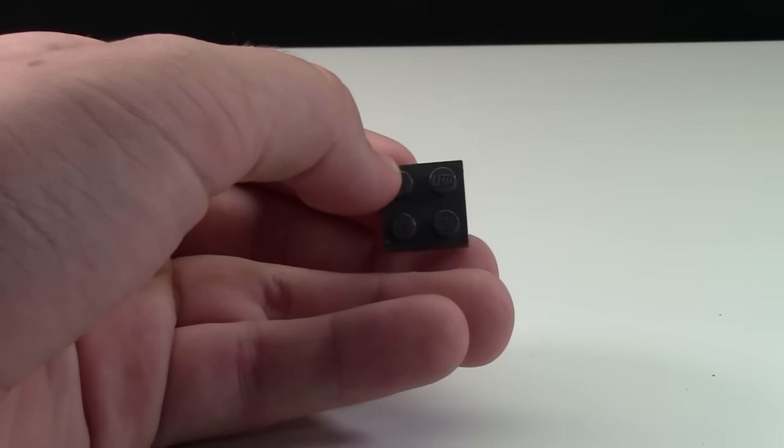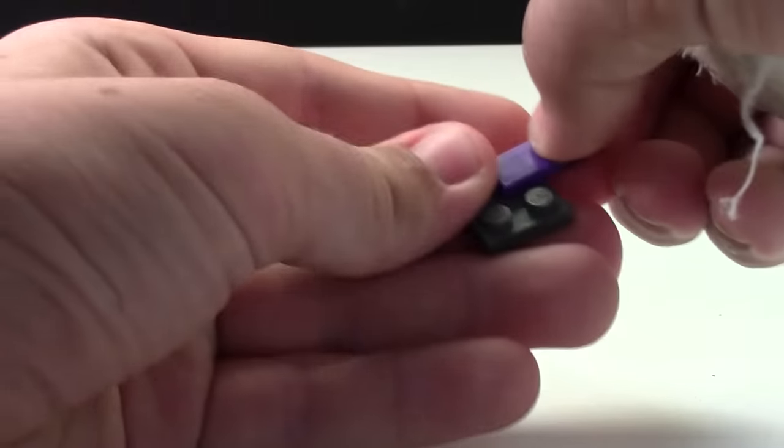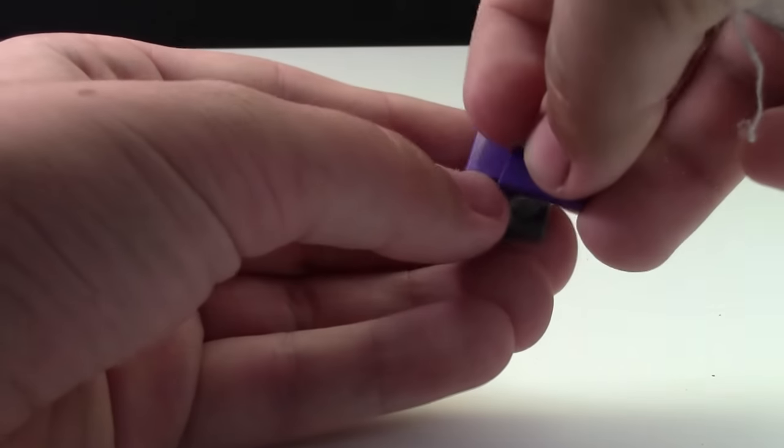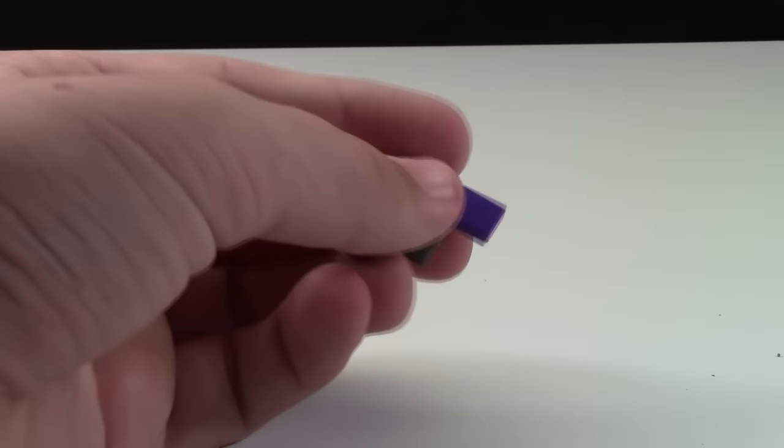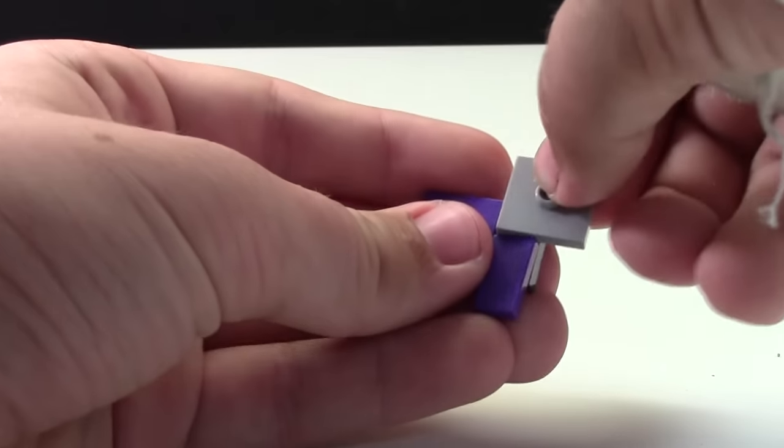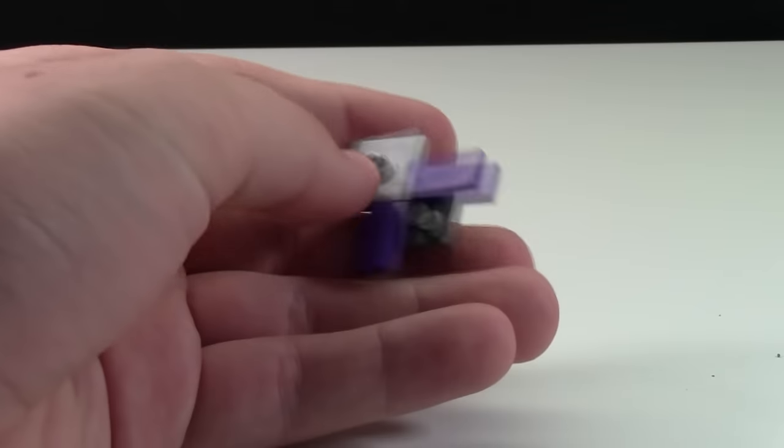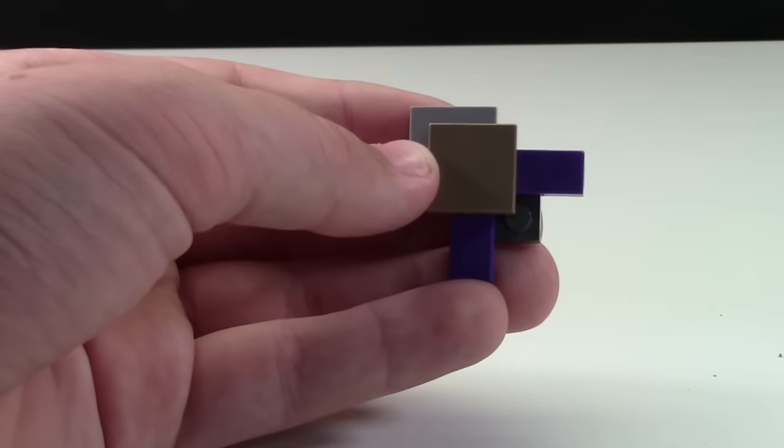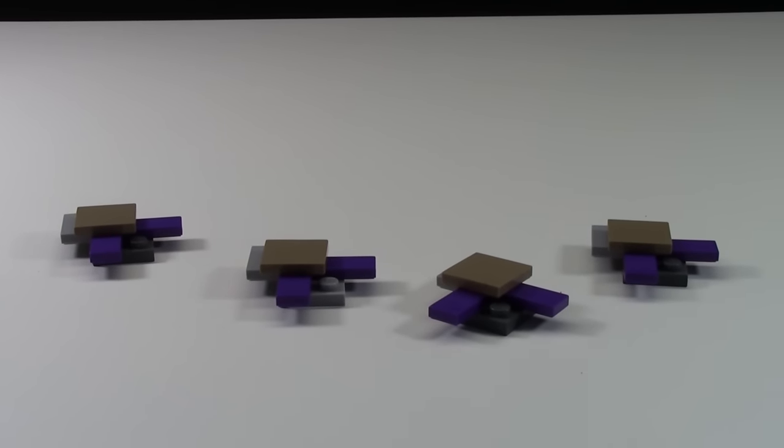Next, take a 2x2 plate and repeat this step four times. On the end of these studs, put your 2x2 tiles. Then take your 2x2 jumper plate and add it here, and take your tile and add it here. Repeat that four times. Once you have four of these pieces made, you're ready to finish your four-way crossing.